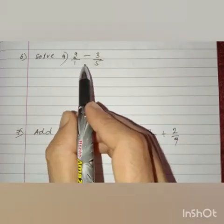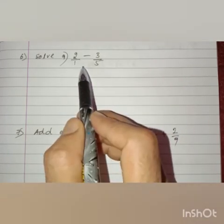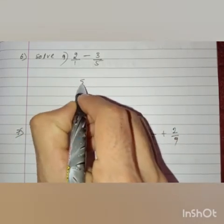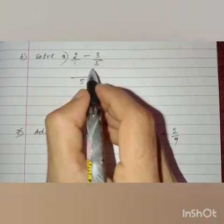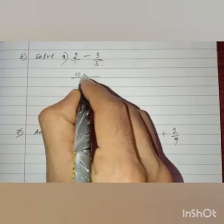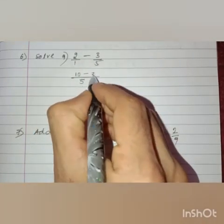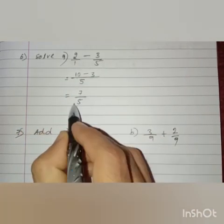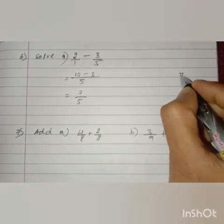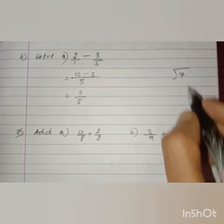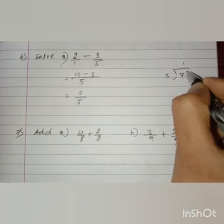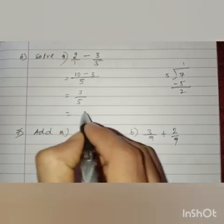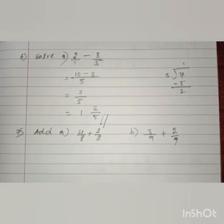We have to subtract the fractions. Taking LCM for 1 and 5, we get 5. Now do cross multiplication: 5 times 2 is 10, minus 3 times 1 is 3. So 10 minus 3 is 7, giving 7 by 5. This is an improper fraction, so we convert it to a mixed fraction. The final answer is 1 and 2 by 5.